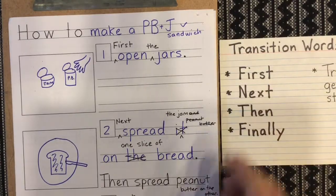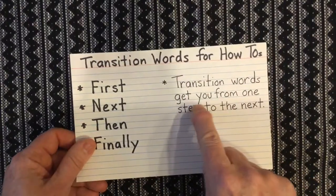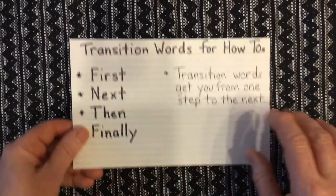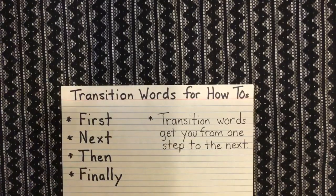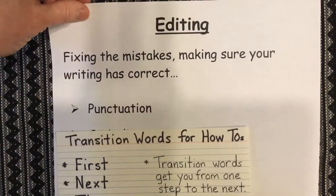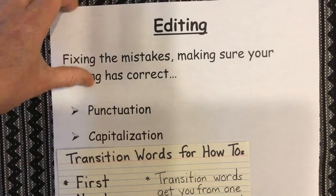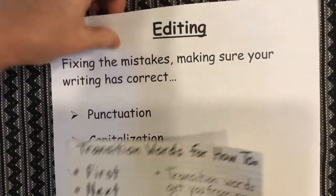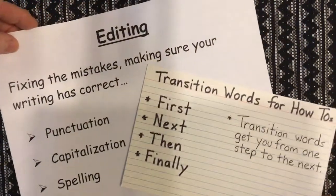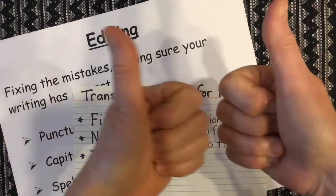So there you go. Today we talked about putting transition words in our writing — remember, transition words get you from one step to the next. We talked about having transition words, and also while we were putting in our transition words we were doing a little bit of editing, fixing the mistakes — making sure our periods were there and our capitals were there to start each sentence. So today was all about transition words and a little bit of editing. Okay, off to your writing!